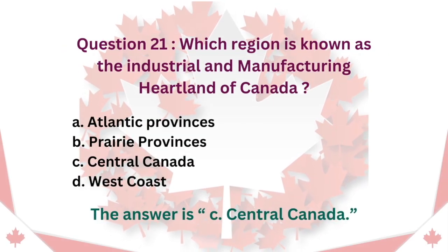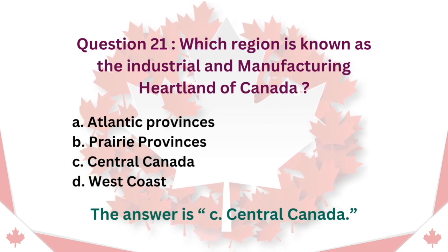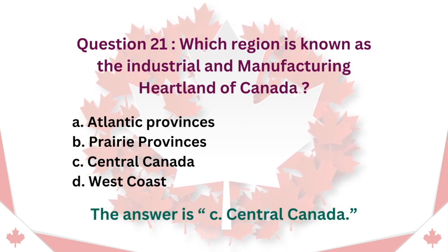Question 21: Which region is known as the industrial and manufacturing heartland of Canada? A. Atlantic Provinces. B. Prairie Provinces. C. Central Canada. D. West Coast. The answer is C. Central Canada.